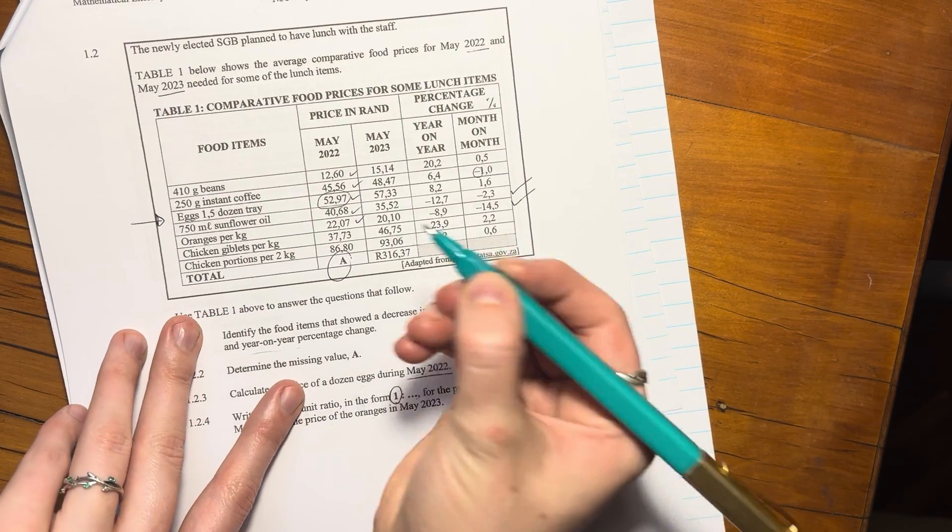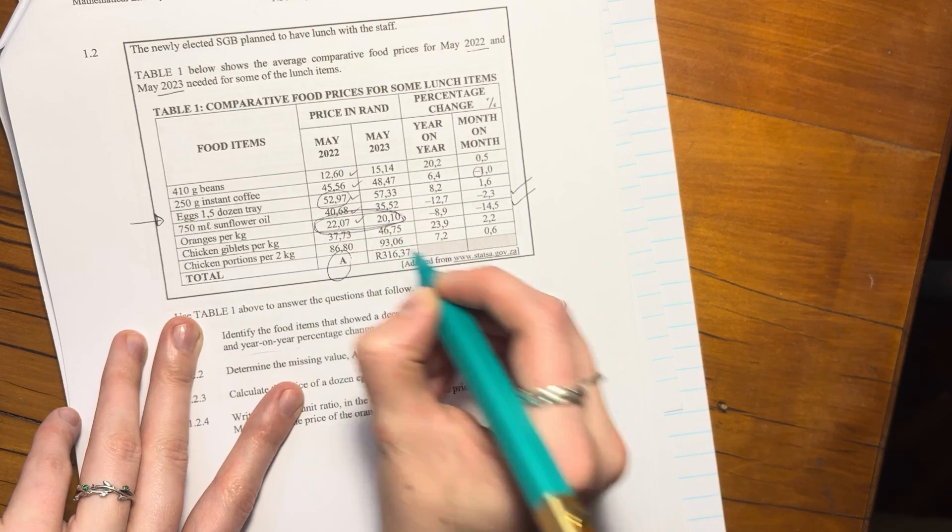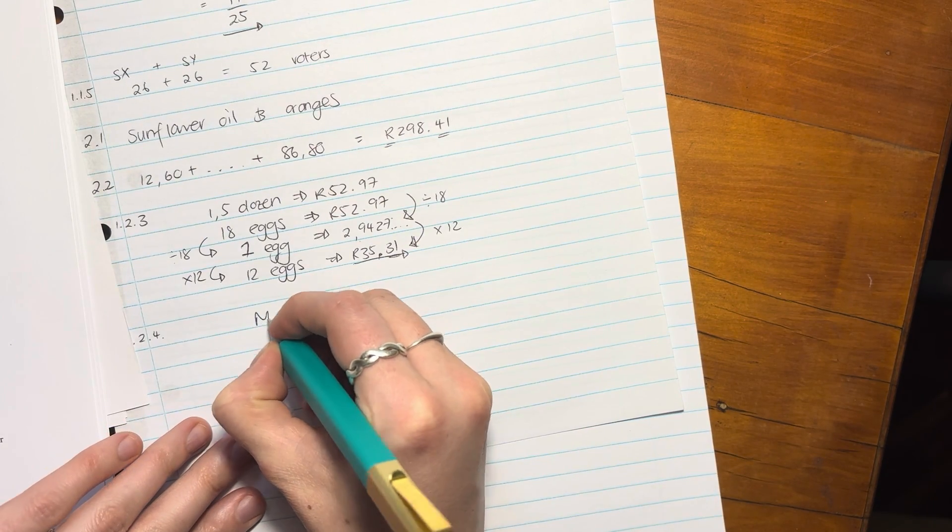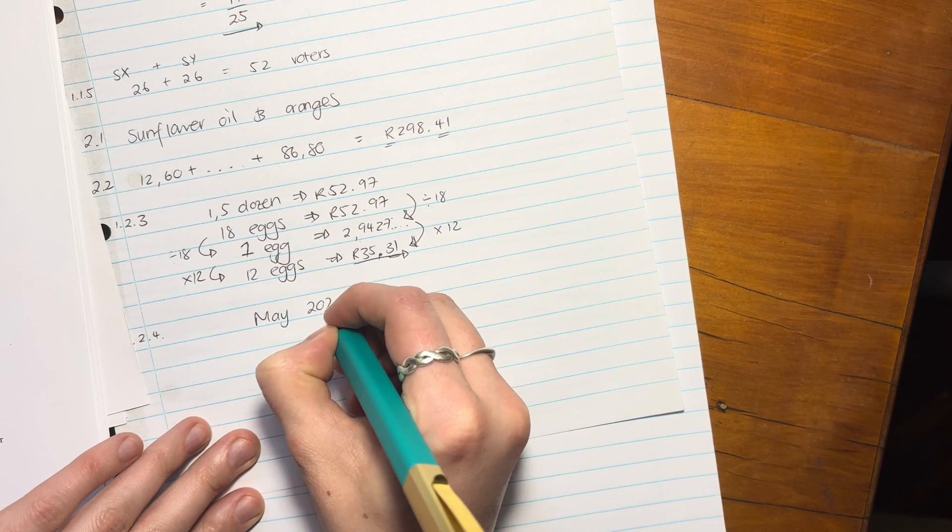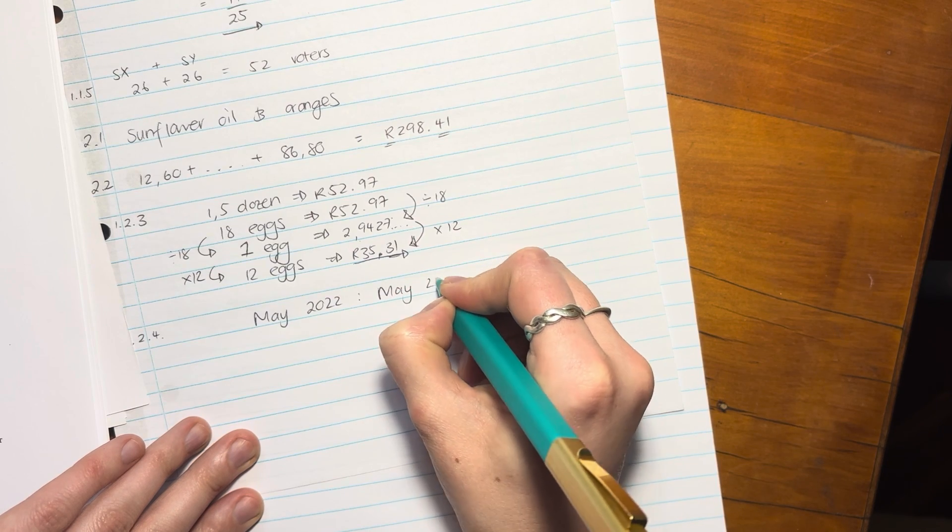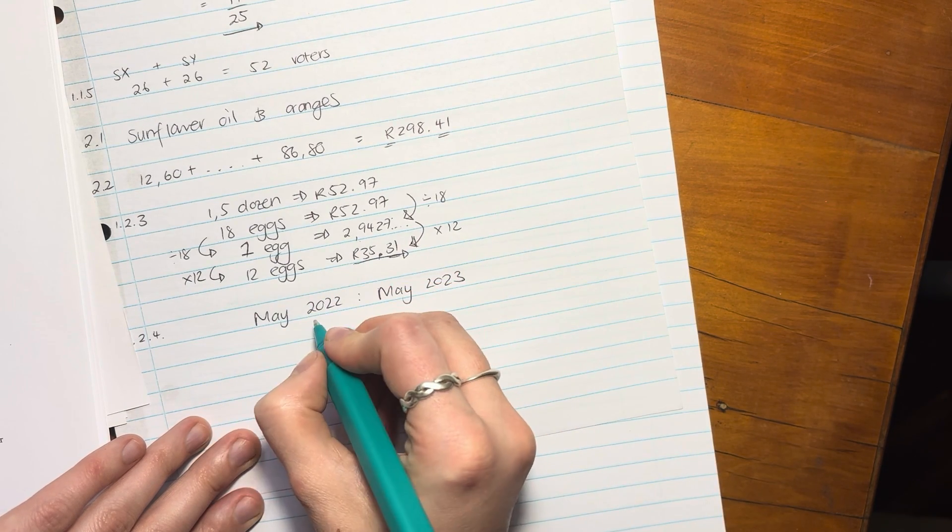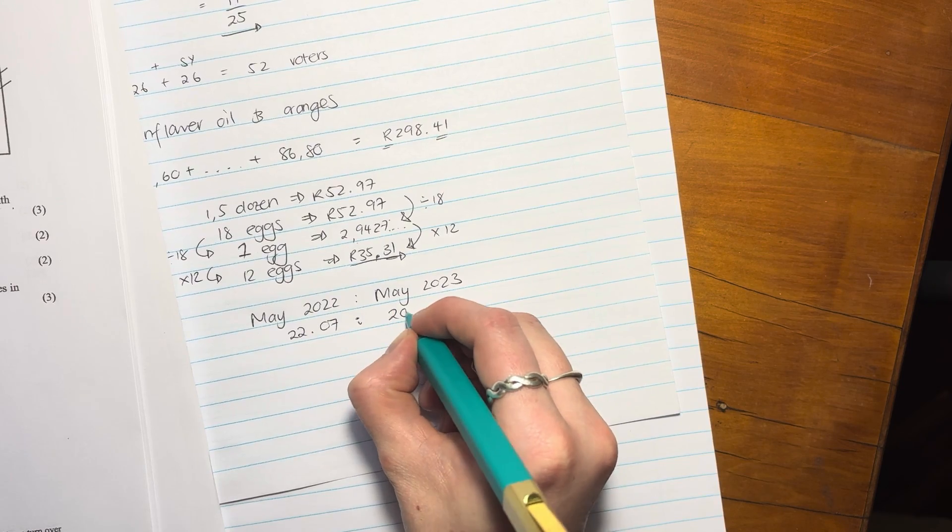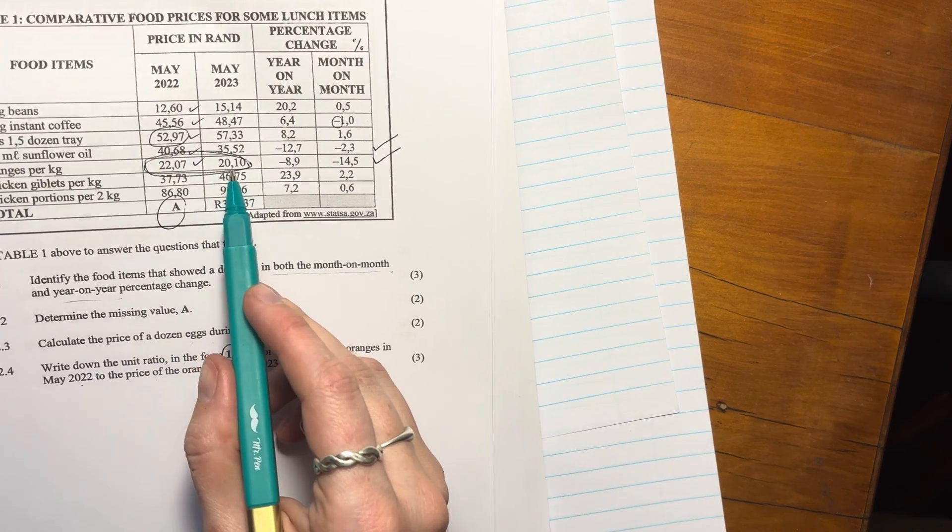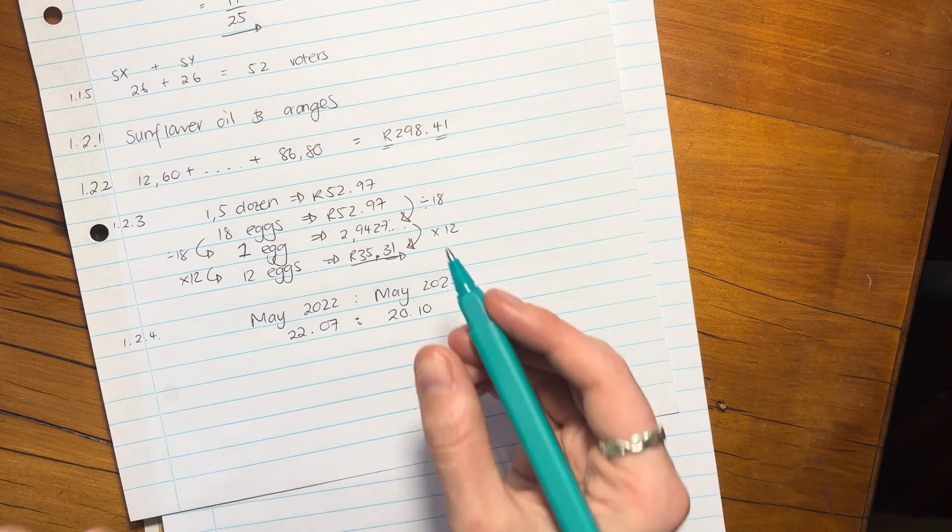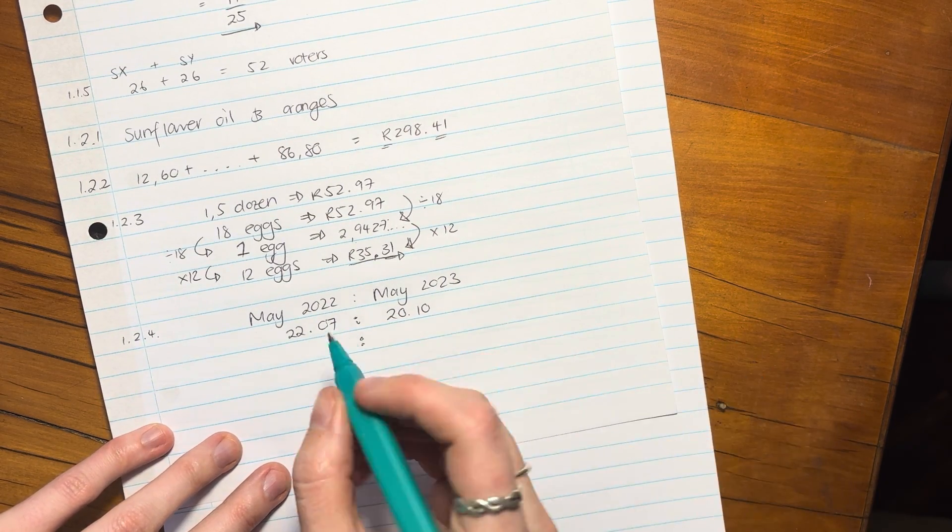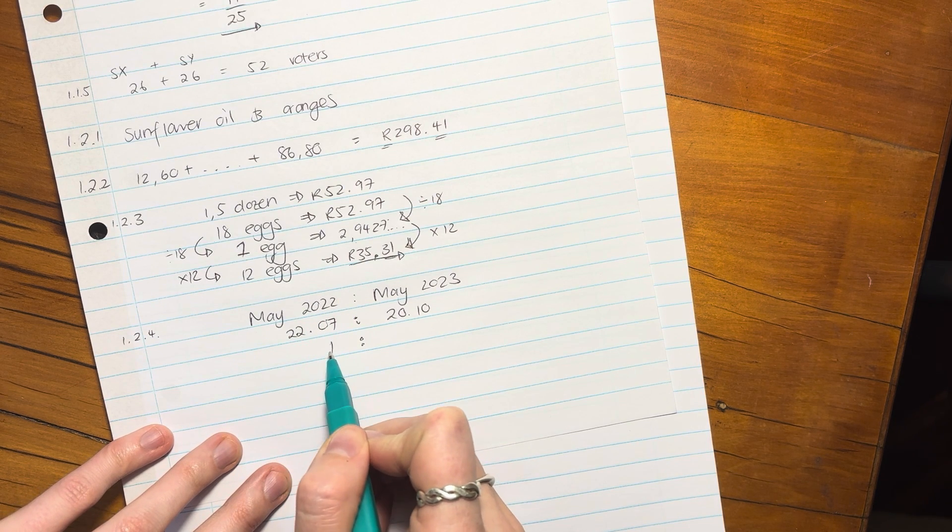Let's look where we're looking. Here's oranges. So those are the two numbers we're looking at. So in May 2022 it was 22.07 over there. And in May 2023 it was 20.10. But now it said please write it in the form like this. That's what the question asked. So what do we have to do to the 22.07 to get it to 1? Now remember when it comes to ratios, we don't just subtract. We either times or we divide.